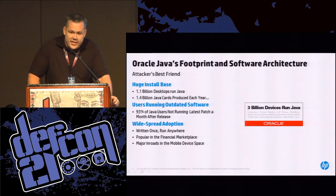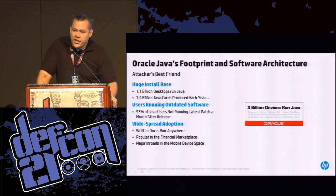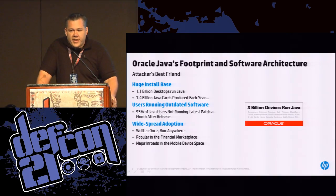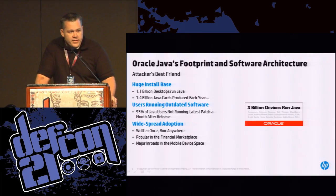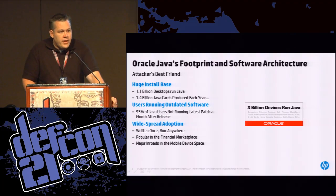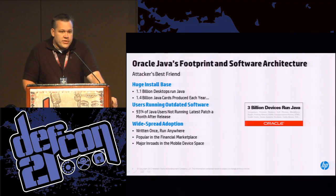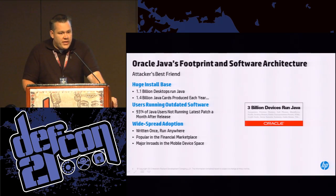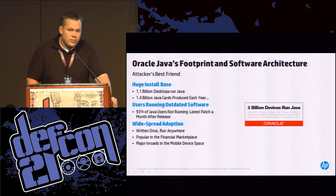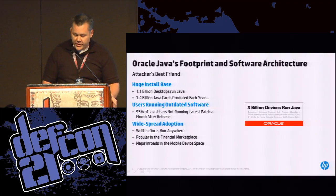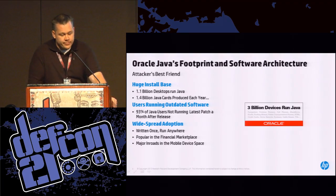Schools are using Java as their base language for computer science students, so we have thousands and thousands of developers coming out every year whose core language is Java. As a result, there's been a massive widespread adoption of Java in the marketplace — in the financial marketplace and in the mobile space — so it's a really good target for attackers.